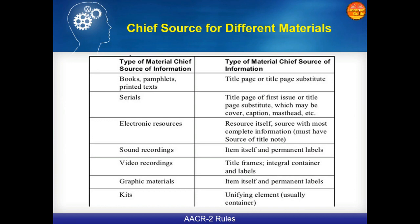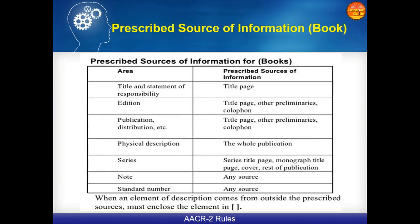The prescribed source of information for books across the seven areas: for the Title and Statement of Responsibility area — the title page; for Edition — title page, other preliminaries, and colophon; for Publication, Distribution, etc. — title page; for Physical Description — the whole publication; for Series — the series title page, monograph title page, cover, and rest of the publication; for Notes — any source; for Standard Number — any source. When any element of description comes from outside the prescribed source, it is written in square brackets.